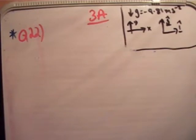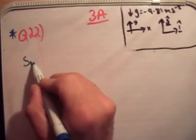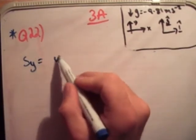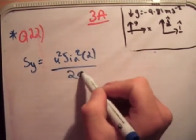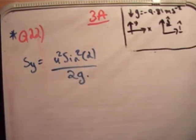Alright, so the first thing is we need to go back to page 73 where on question 18 we proved the maximum height. So the maximum height, s sub y, is equal to u squared sine squared alpha over 2 times g.